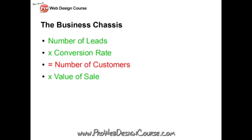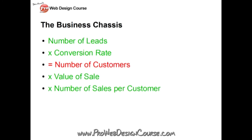For each customer, what's the value of the sale — how many pounds or dollars do you get in an average sale to an average customer? Multiply that by how many times you can resell to the same customer. The easiest people to sell to are often the people you've sold to before. We've made that mistake in our business for years — we get a customer, build them a website, take their money, and then don't contact them again because we're too busy finding the next customer. The rule of thumb is it costs seven times more to attract a new customer than to close a sale with a previous customer.